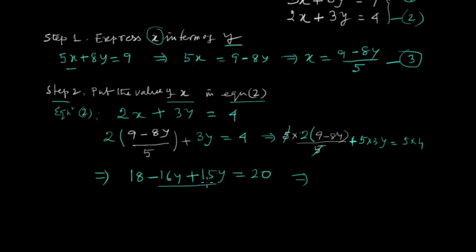So now minus 16y plus 15y gives minus y, and we transfer 18 to the other side, so 20 minus 18. Therefore minus y equals 2, so y equals minus 2.